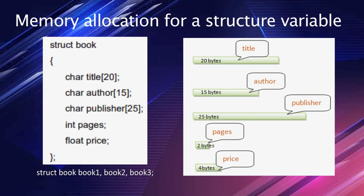A diagrammatic representation of memory allocation for a structure variable is shown. For the book structure: 20 bytes are reserved for the title, 15 bytes for the author name, 25 bytes for the publisher name, 2 bytes for pages, and 4 bytes for the price. Three structure variables — Book1, Book2, Book3 — are created, and this amount of memory is reserved for each.